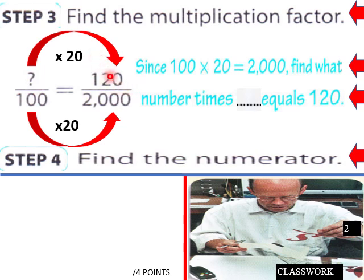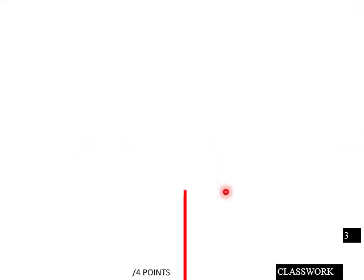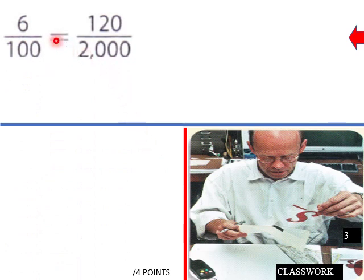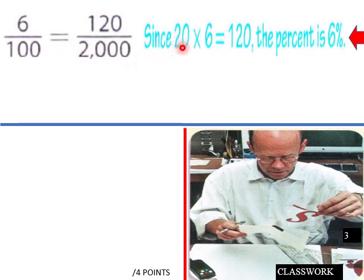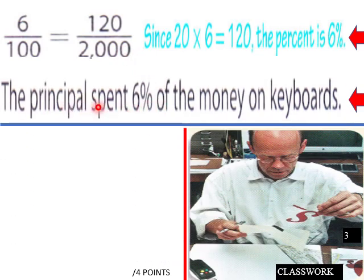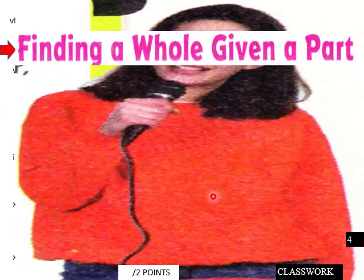Step 4: Define the numerator. Since 100 times 20 equals 2000, blank times 20 must equal 120. What times 20 equals 120? The answer is 6. So the proportion is 6 over 100 equals 120 over 2000, and 6 times 20 equals 120. The percent is 6 over 100, or 6 percent.